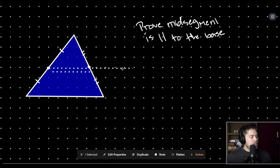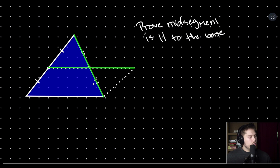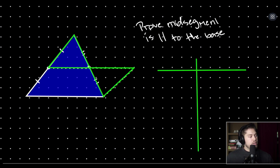Let's duplicate our mid-segment and shift it over, and then connect this corner to here. I'm going to outline in green the triangles that I want us to focus on. First we're going to prove that these two triangles are congruent, so let's get ready with our statements and reasons for our proof.